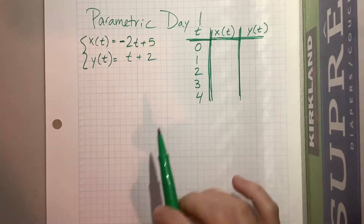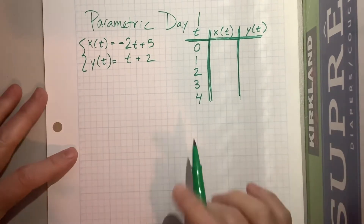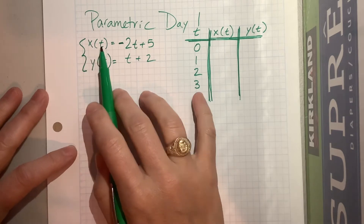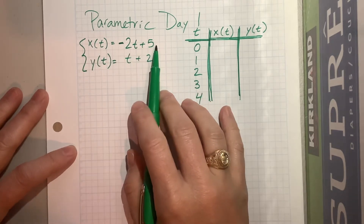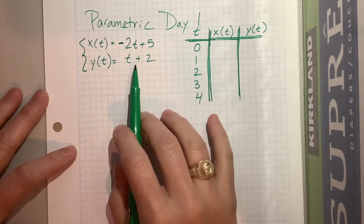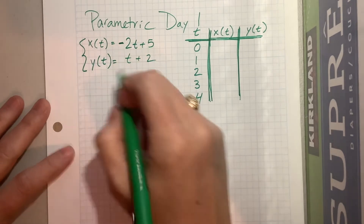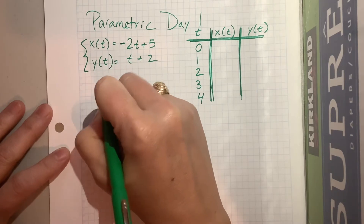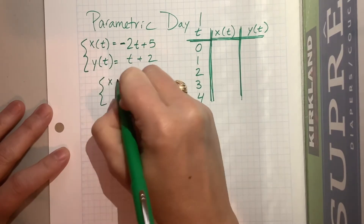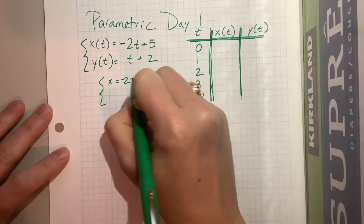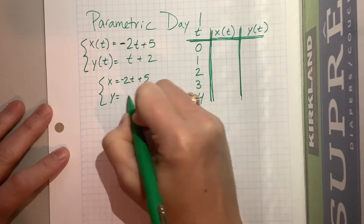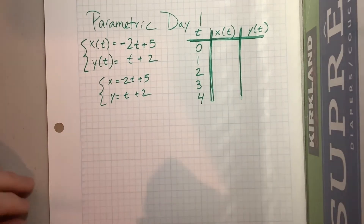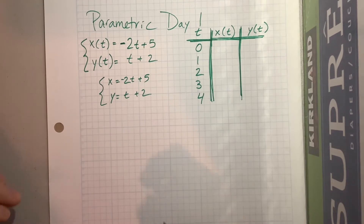In this example, the one on your notes, they're telling you that x of t is equal to negative 2t plus 5, and y of t is equal to t plus 2. Sometimes we write this as x of t, but more often I'm just going to write x equals and y equals. You can have other variables and other parameters, but this is the norm.